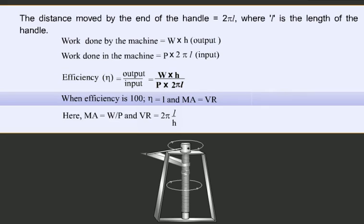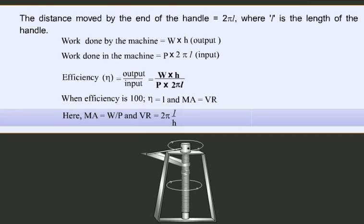Now when efficiency is 100%, the value of η is equal to 1, and mechanical advantage is equal to W/P, and velocity ratio is equal to 2πL/H.